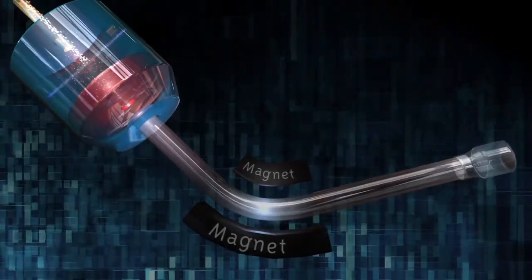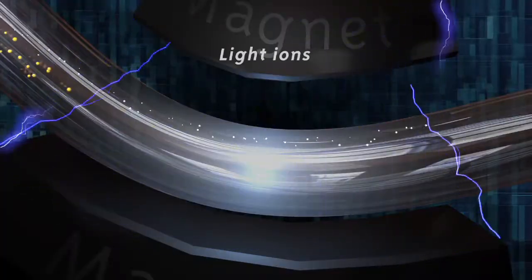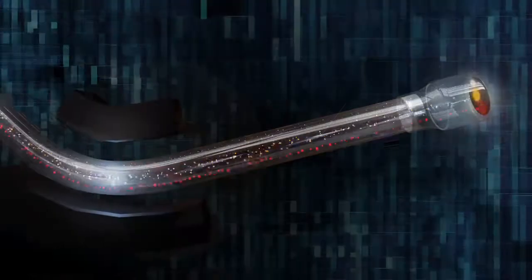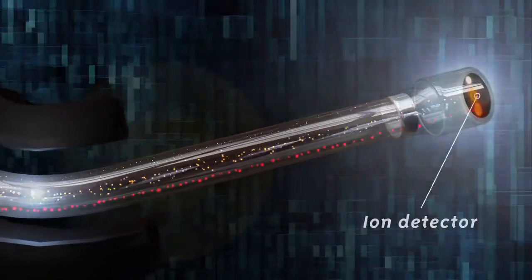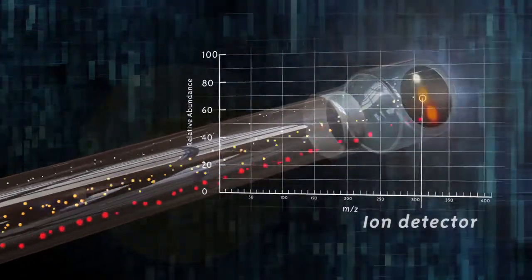The fragments produced are propelled through a magnetic field and automatically sorted according to their mass and charge. An ion detector collects and records the fragments, producing a graph showing the mass-to-charge ratio of each.